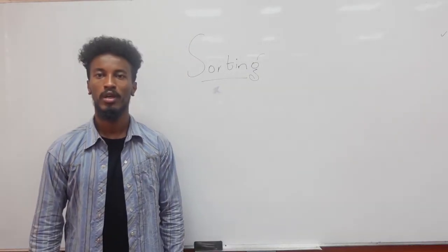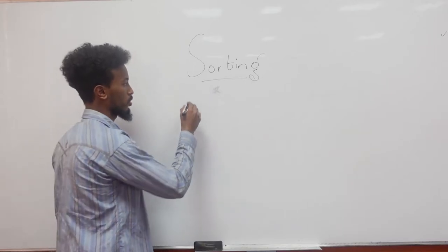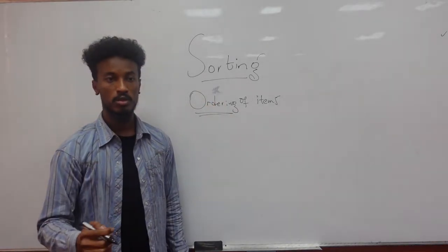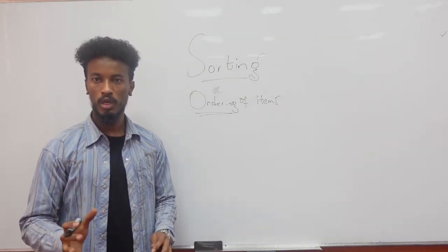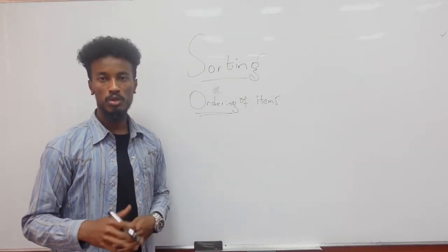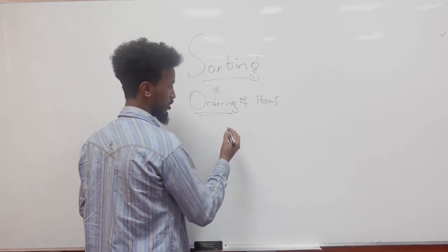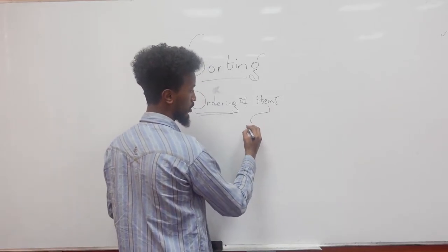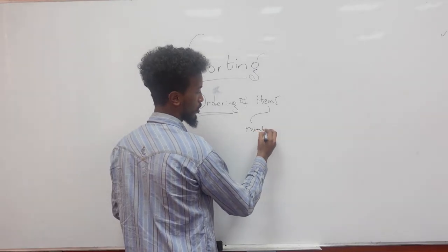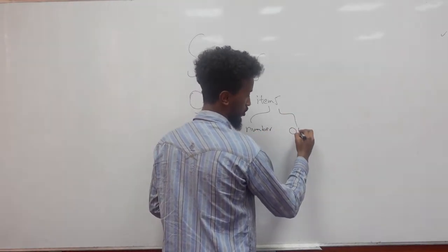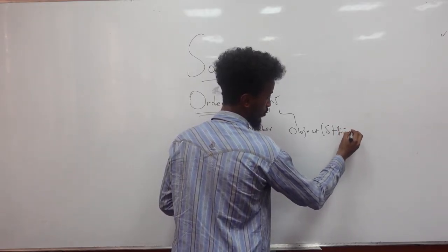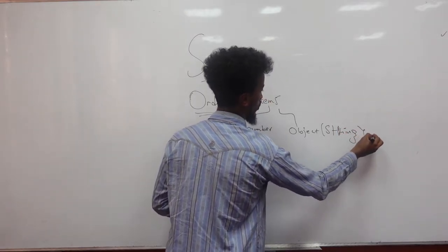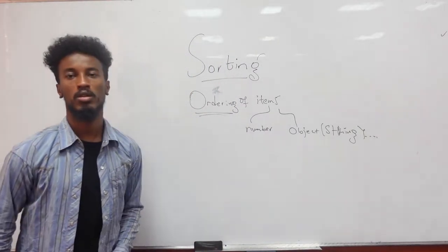What do we mean by sorting? Sorting is ordering of things. Ordering represents a level of difference in items in which we can compare. So, these items could be numbers or objects, like strings, because there are many objects that are comparable.